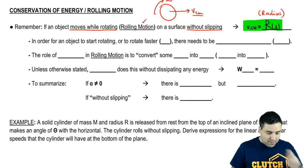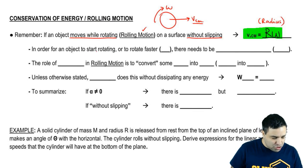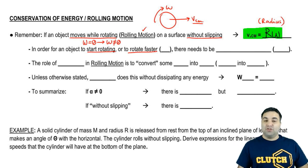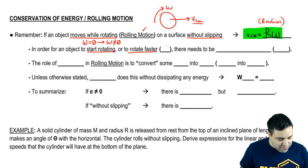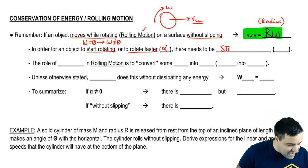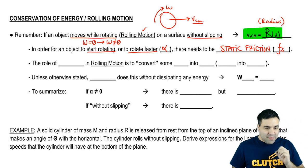Now remember that in order for an object to start rotating, to go from omega 0 to an omega of not 0, or to rotate even faster, in both of these cases we have alpha, we have an acceleration, there needs to be static friction. You have to have static friction in order to roll.